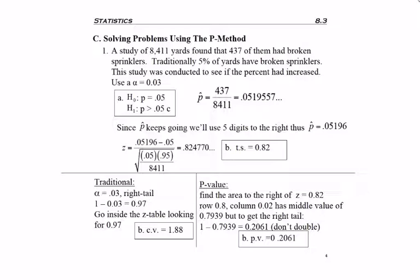So if I have a right tail test, then I'm going to get a positive test statistic, and I do not cut alpha in half because I do not have two tails.